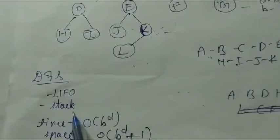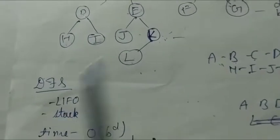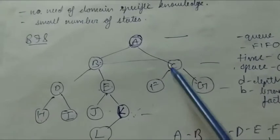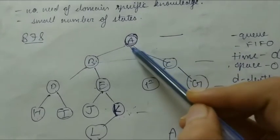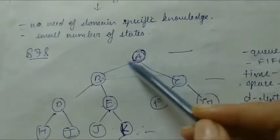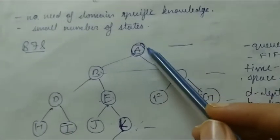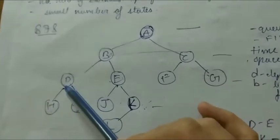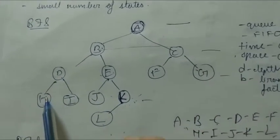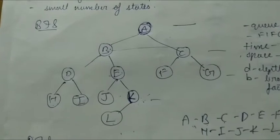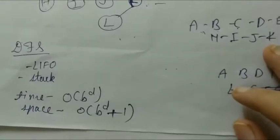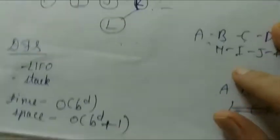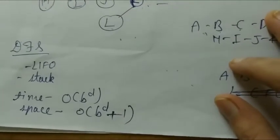The second approach is DFS. DFS is implemented with the help of a stack data structure and uses the last in, first out rule. If we apply DFS to this tree, the series of nodes visited will be: A, then B, then D and E — it goes to the maximum depth first. DFS has a time complexity of O(b^d) and space complexity of O(b^(d+1)).